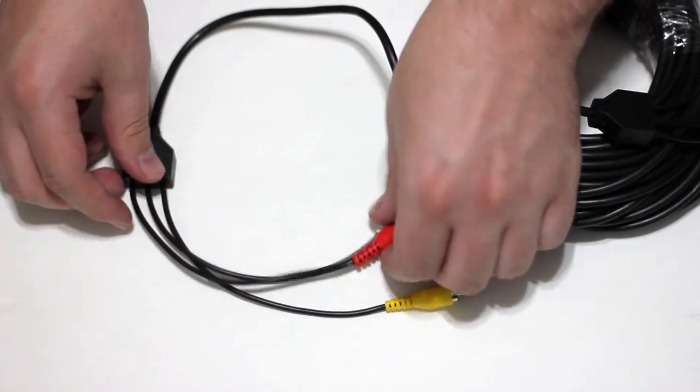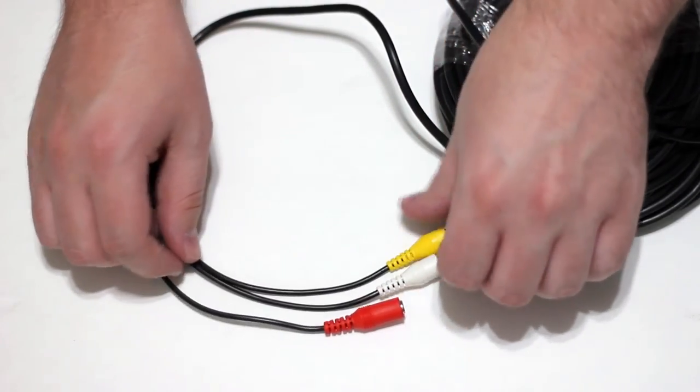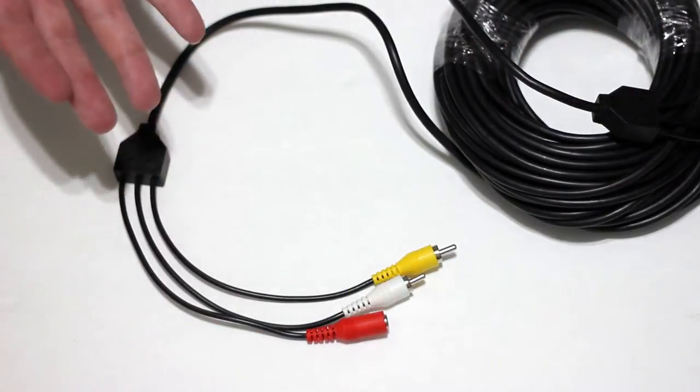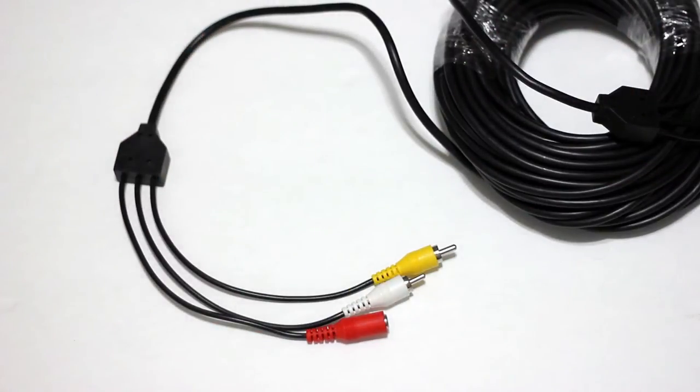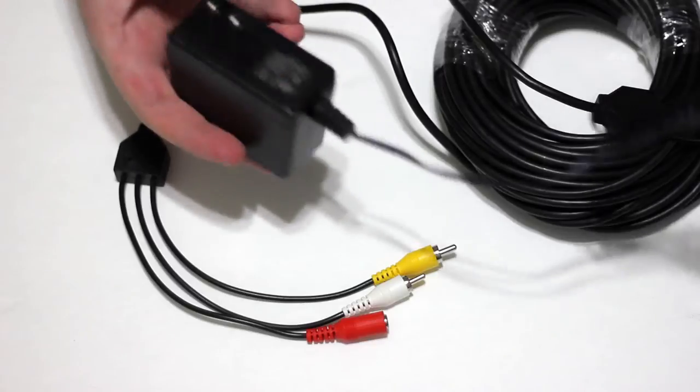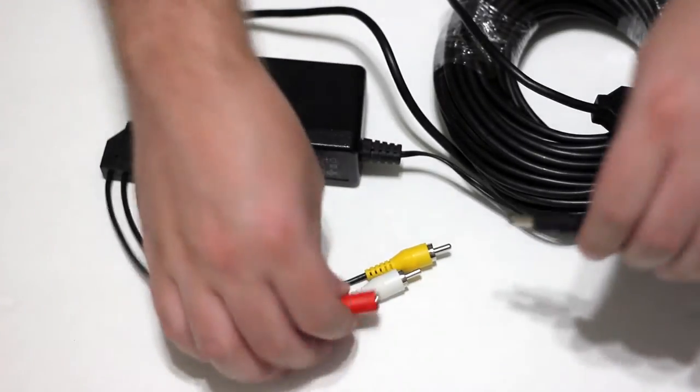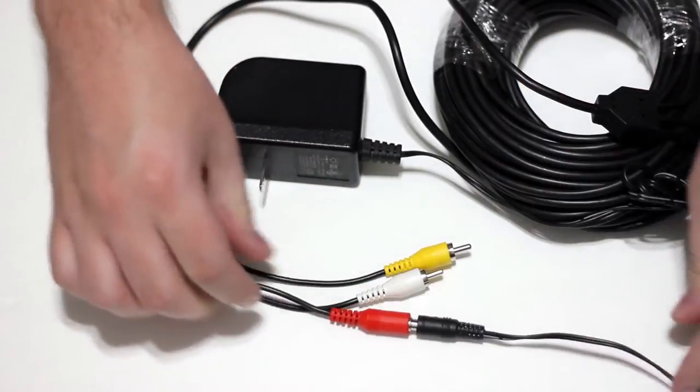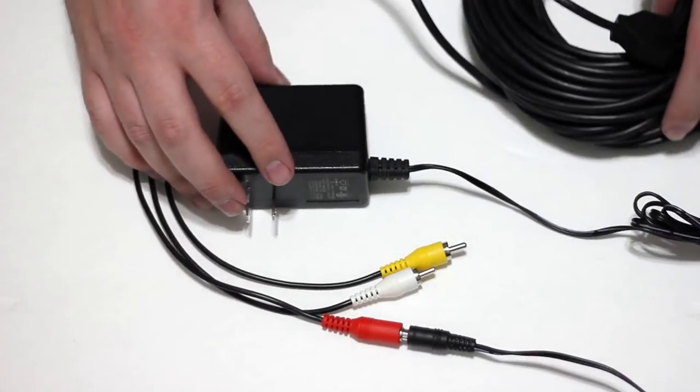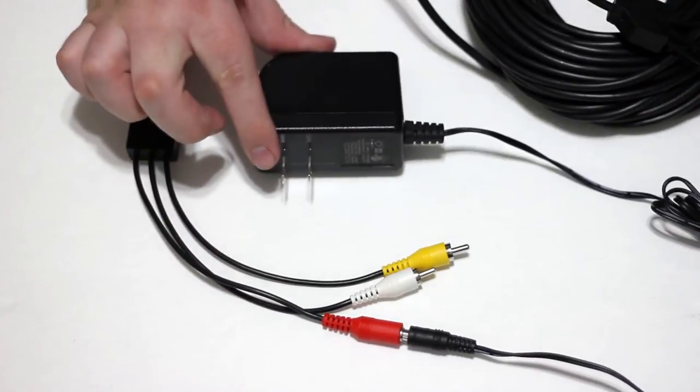So this would be the end that you would then have coming out of your wall or wherever to where your DVR is. Here's your power supply. Plugs in there. Microphone is now powered. This has to plug into the wall, obviously.